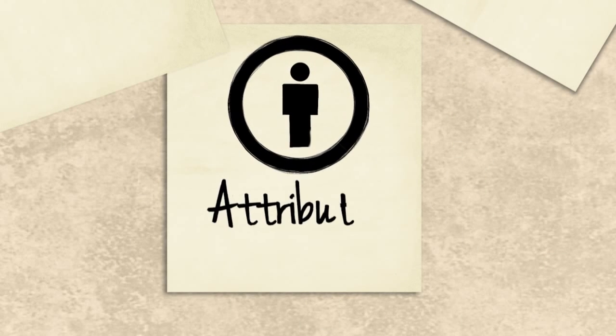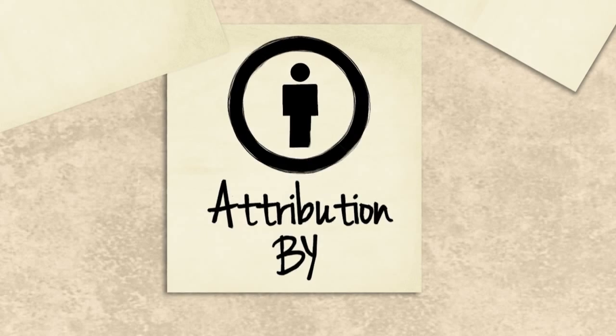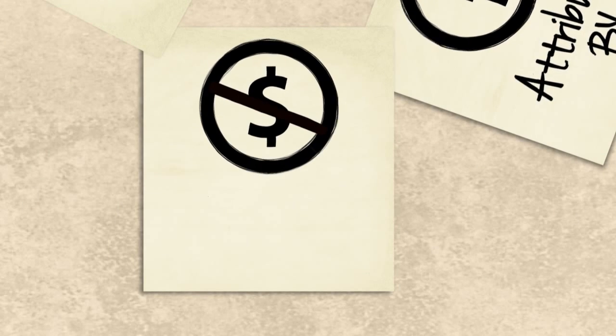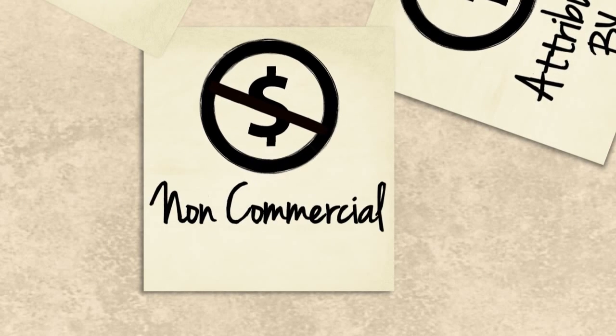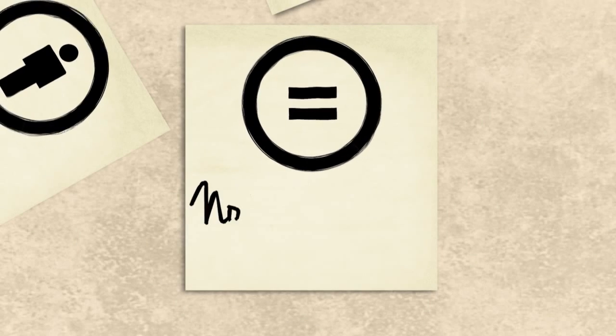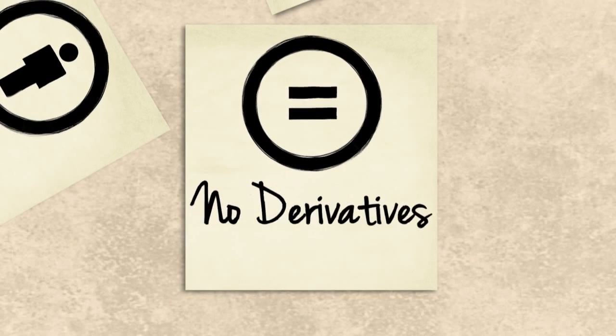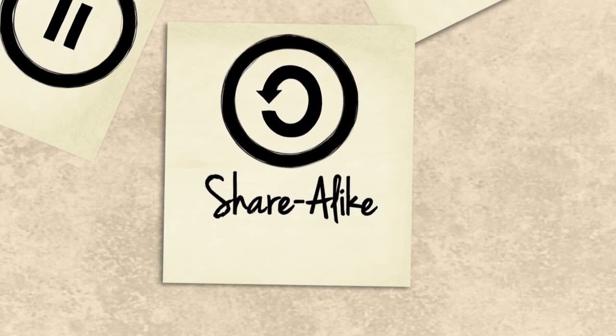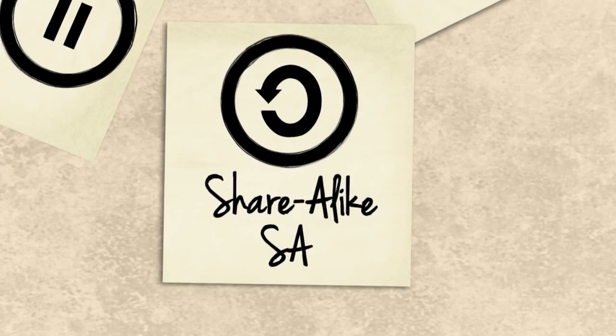What are the licenses? This sign attributes the work to its owner — how do you want to be known? This sign prevents the user from using the creative work for commercial purposes. This sign indicates that the user can use the work but cannot apply any changes to it — no remixing. This sign gives permission for modifying and distributing the creative content, but the user must share their work under the same terms as the original.